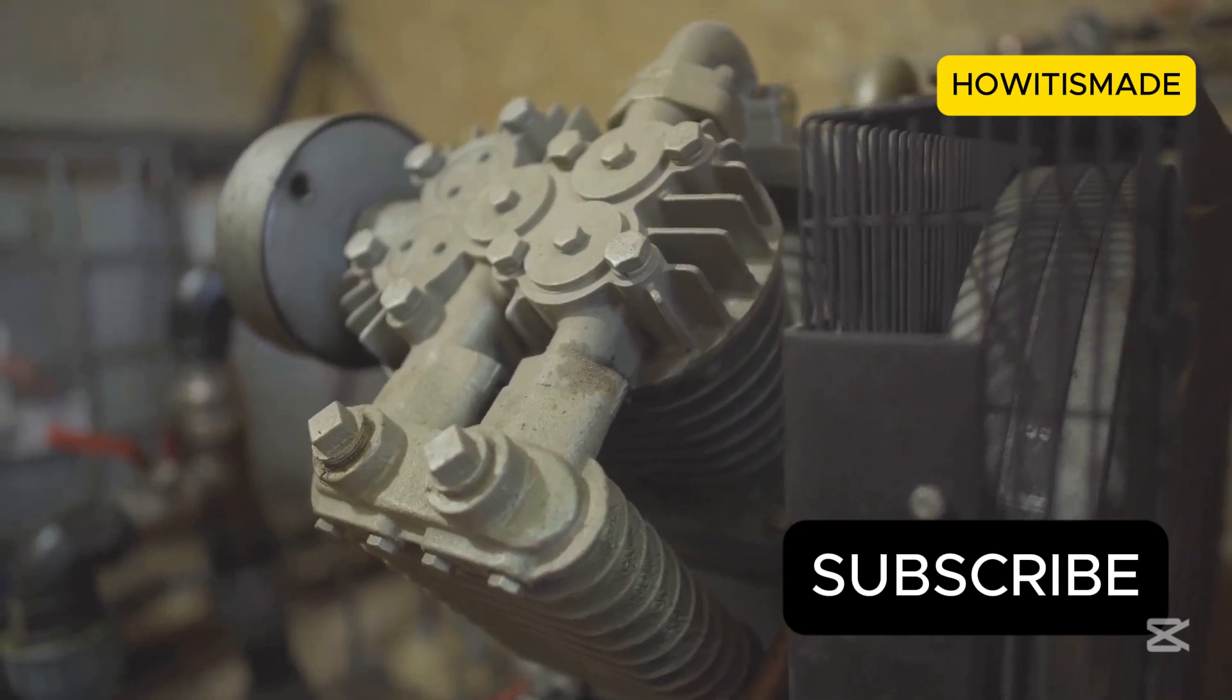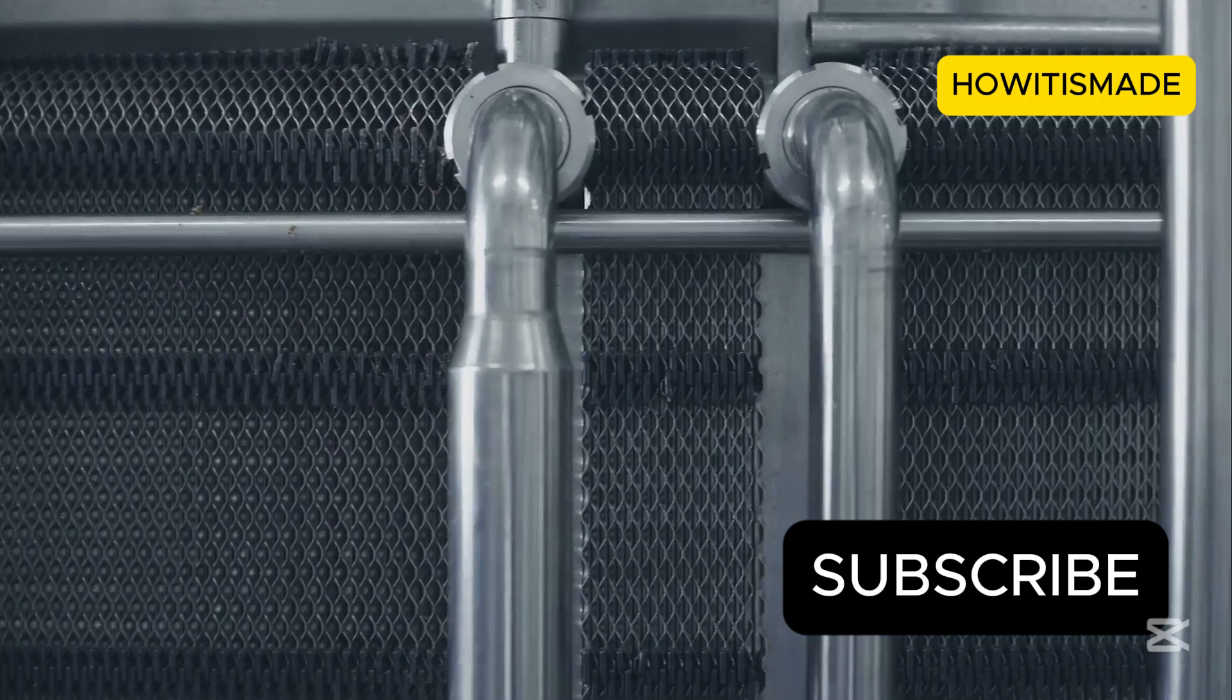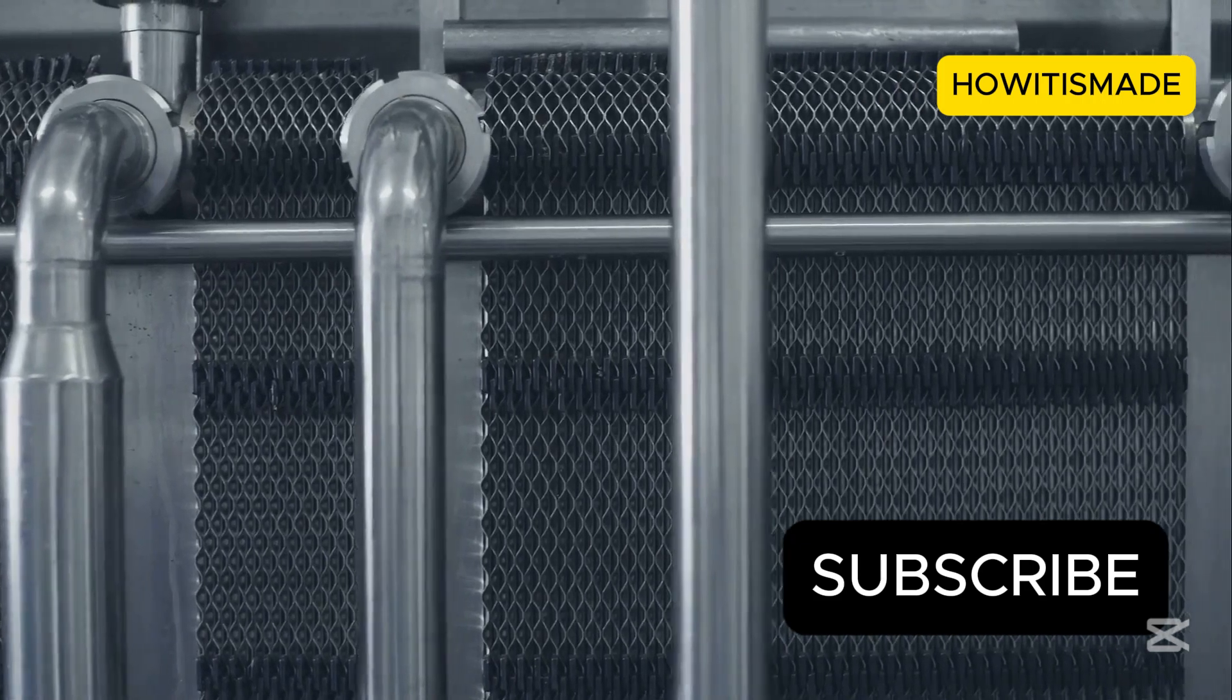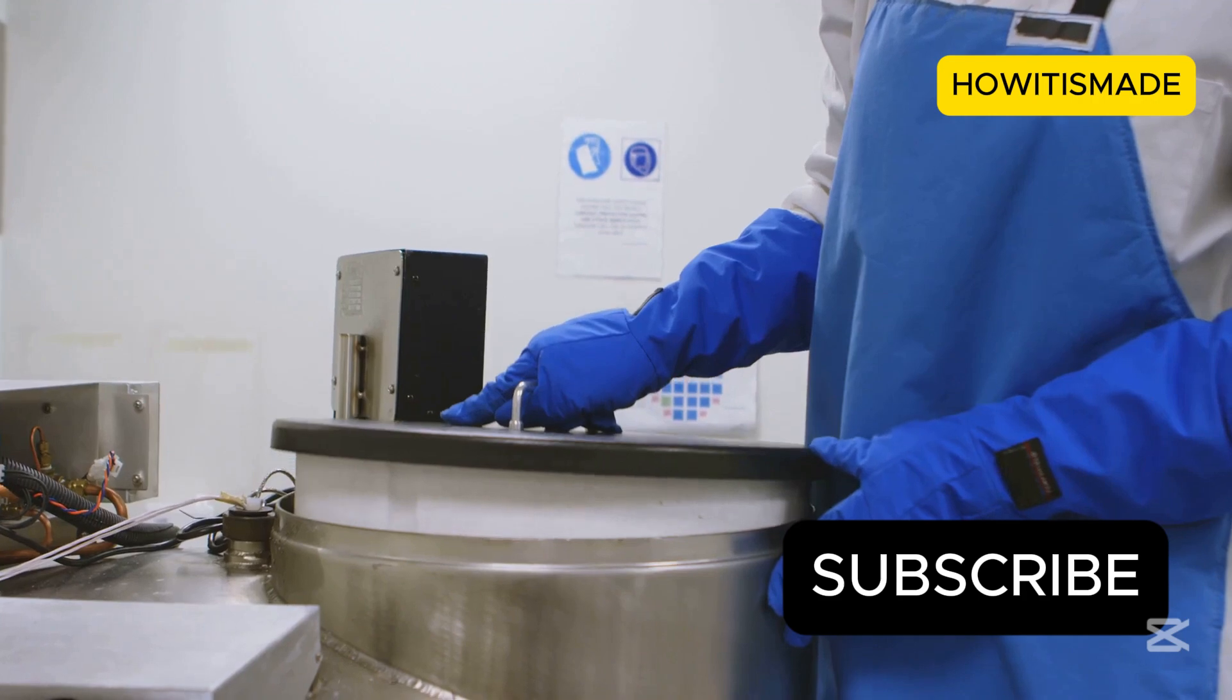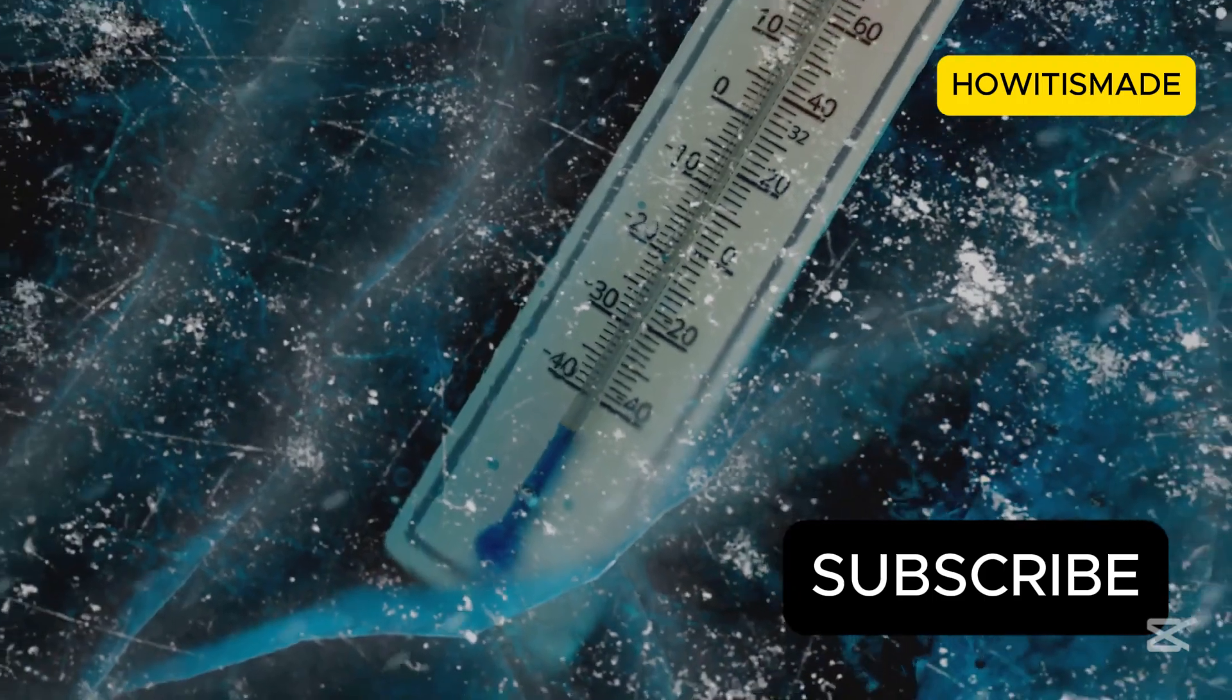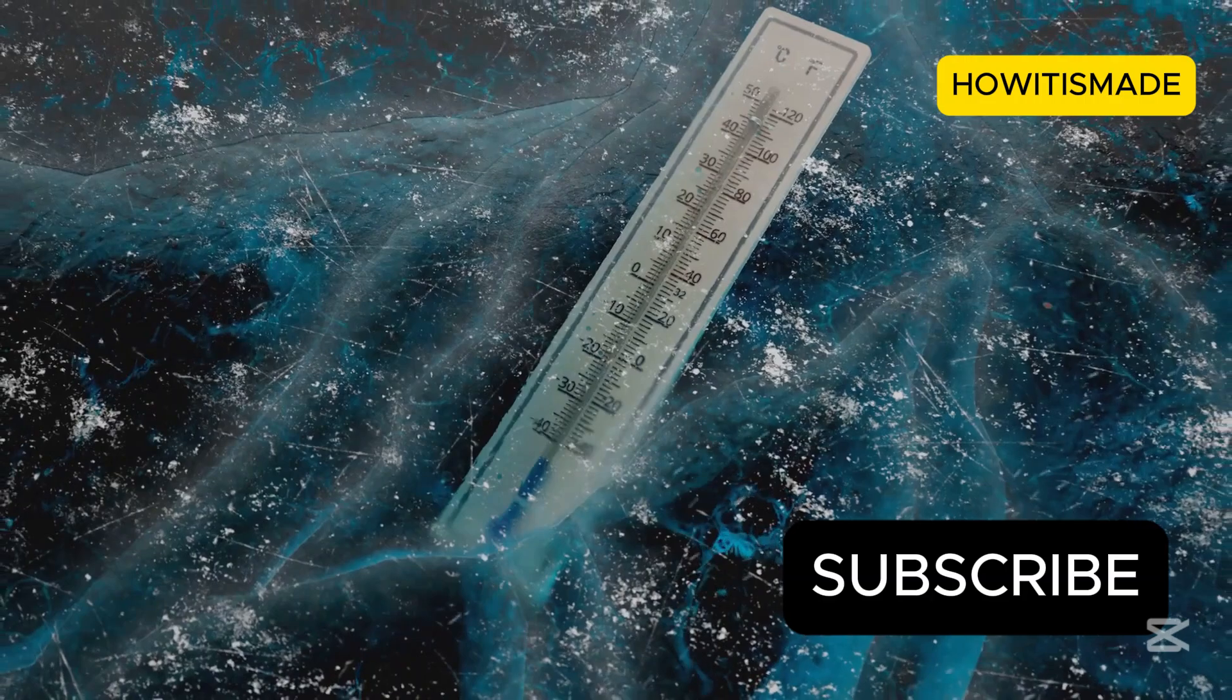Once we have our hands on this gas, we crank up the pressure and cool it down, way down. Imagine a giant refrigerator, but instead of keeping your drinks cold, it's squeezing carbon dioxide gas until it turns into a liquid. And we're not talking about your regular refrigerator temperatures here. We're talking about a bone chilling minus 78.5 degrees Celsius. That's minus 109.3 degrees Fahrenheit.